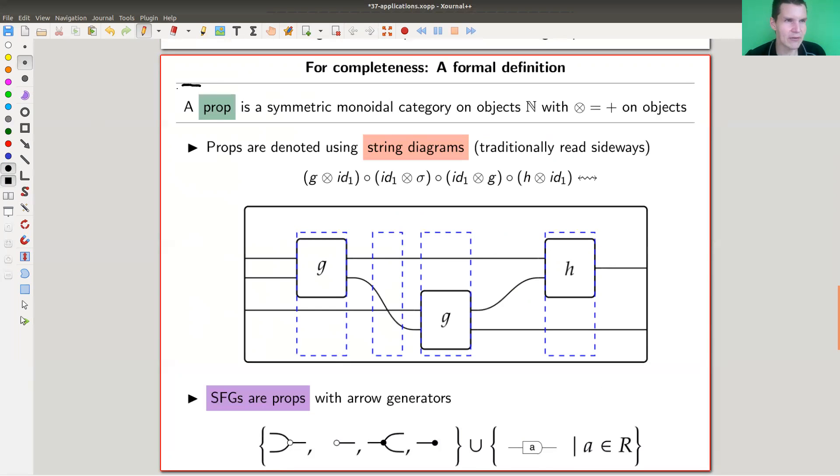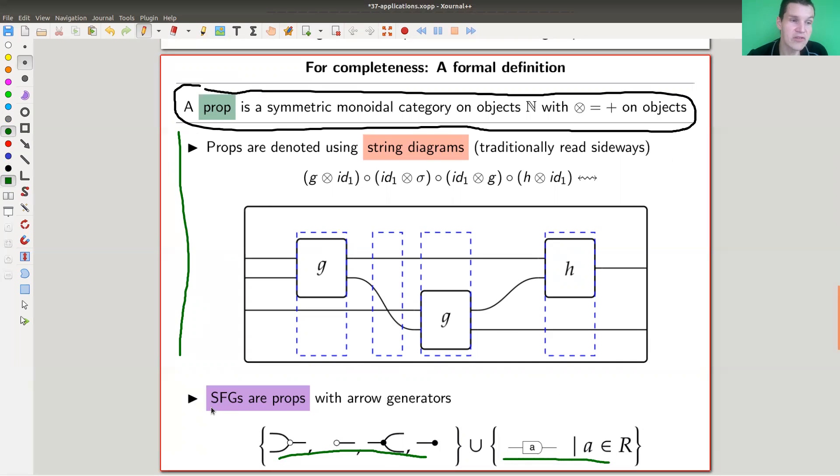Let's formulate everything in terms of categories. The way to formulate everything in terms of categories is to have this definition of a prop, which basically is a symmetric monoidal category on N, the number of inputs. You can model it by using string diagrams exactly in the same way as I've shown on the previous pages. These SFGs are special props. This is the language people use: string diagrams in this prop language. Then you can specialize to those flow graphs which mimic matrix multiplication.